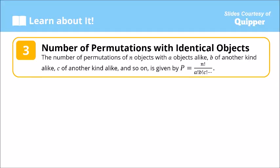Next, we have the number of permutations with identical objects. The number of permutations of n objects with a objects alike, b of another kind alike, c of another kind alike, and so on, is given by the formula: P equals n factorial over a factorial times b factorial times c factorial and so on.